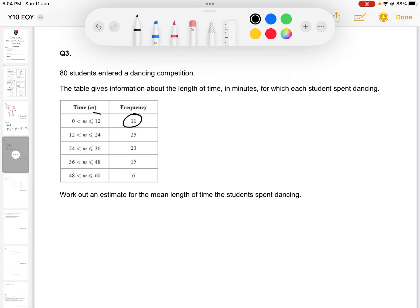So 11 students spent between 0 and 12 minutes dancing, 25 spent between 12 and 24 minutes, so on and so forth. Find an estimate for the mean length of time the students spent dancing.